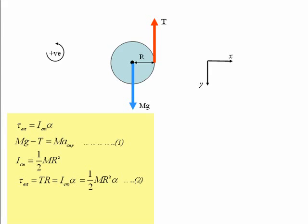We're told in the question that the string unwinds without slipping. And so the velocity of the centre of mass is equal to the radius of the yo-yo R times its angular velocity omega. That is the condition for non-slip.